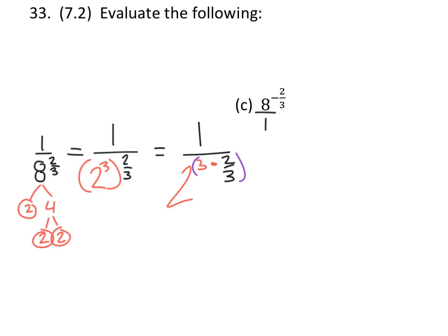And I could simplify this right away like we did in the last video, but I'm just going to go ahead and cancel out those 3's there. So what we end up with is 1 over 2 squared.